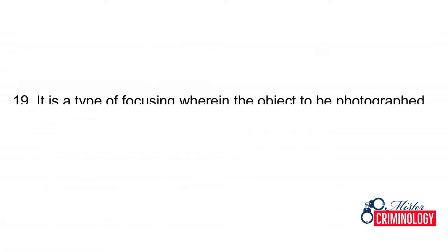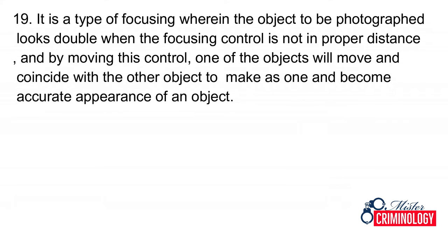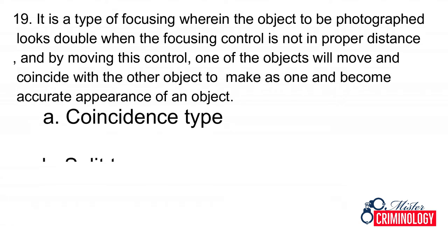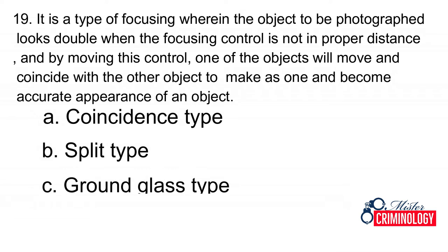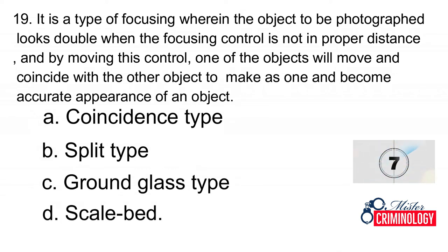Question 19: It is a type of focusing wherein the object to be photographed looks double when the focusing control is not at the proper distance. By moving the control, one of the objects will move and coincide with the other to become an accurate appearance. A. Coincidence type, B. Split type, C. Ground glass type, D. Scale bed. Answer: A. Coincidence type.